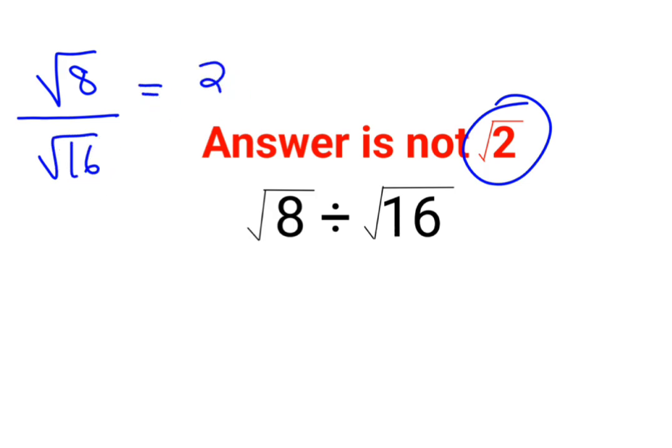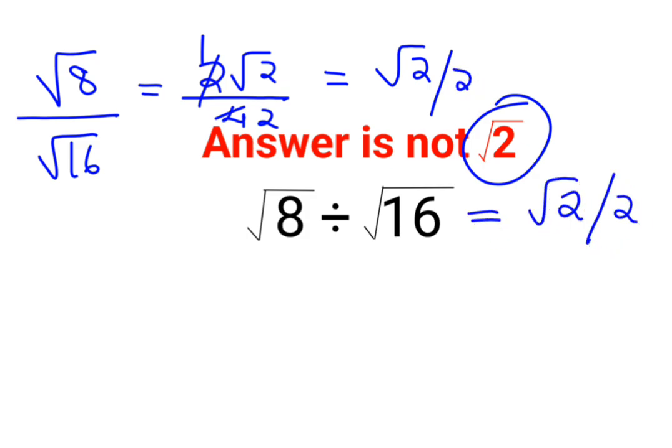Root 8 can be written as what? 2 root 2. And root of 16 can be written as just 4. So your answer for this one will be what? Root 2. Please understand root 2 divided by 2 is the answer.